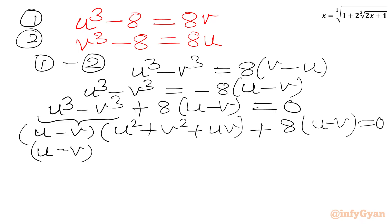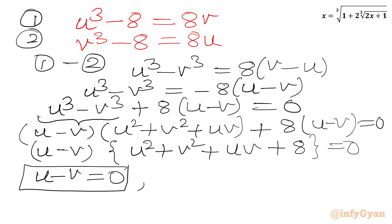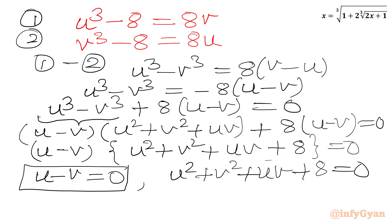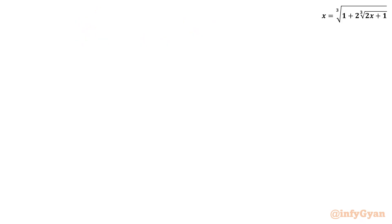We can take U minus V as overall common factor. So U minus V times the quantity U squared plus V squared plus UV plus 8 equals 0. Applying the product zero rule: either U minus V equals 0, or U squared plus V squared plus UV plus 8 equals 0.